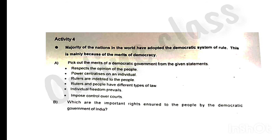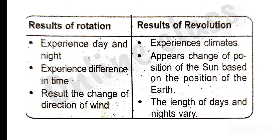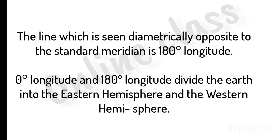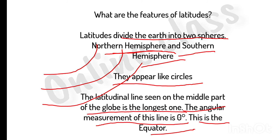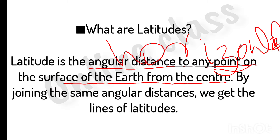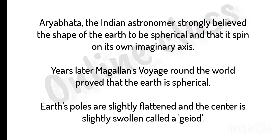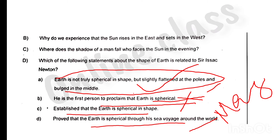Now we will discuss activity 4 — that is another chapter related to the government chapter. Now we will discuss 3 activities and 3 chapters in 15 minutes. We will discuss these videos in 15 minutes. Now we will discuss the next question: why do we experience the sun rises in the east and sets in the west? We will be able to revise chapter 3.